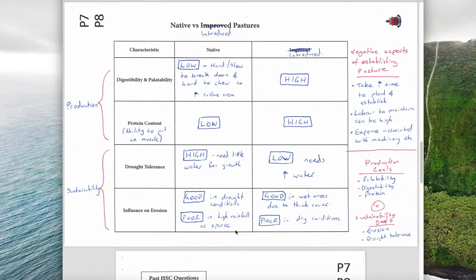Moving along to look at the pros and cons of native versus introduced pastures. We have digestibility and palatability and protein content - these are production issues. And we have drought tolerance and influence on erosion - these are sustainability issues.